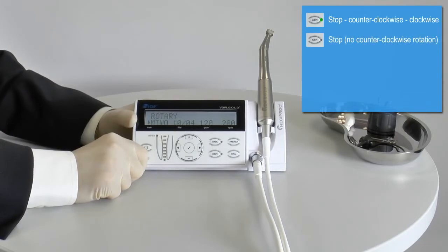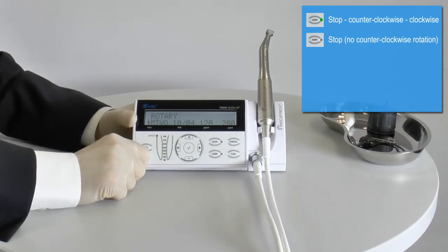When the ASR key lights red, the motor stops once the torque limit has been reached. However, the motor will not reverse in counter-clockwise direction.